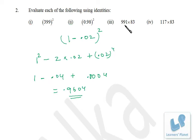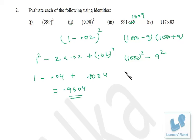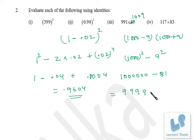For 991 × 1009, note that 991 = 1000 - 9 and 1009 = 1000 + 9. So it is (1000 - 9)(1000 + 9), which is the (a-b)(a+b) = a² - b² format. Therefore: 1000² - 9² = 1000000 - 81 = 999919.